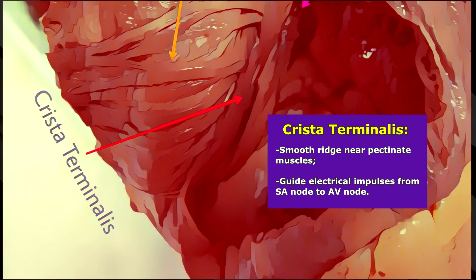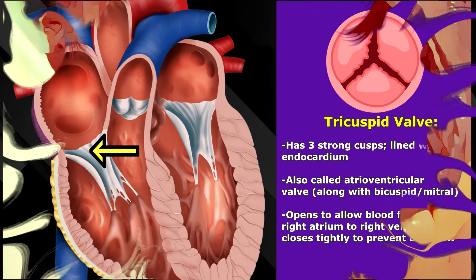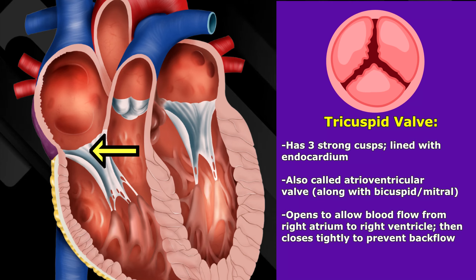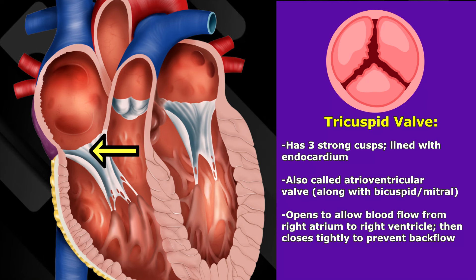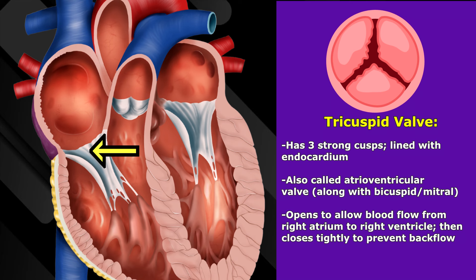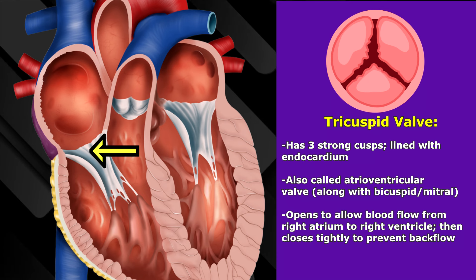Also located near the pectinate muscles in the right atrium is an important smooth ridge called the crista terminalis, which plays a vital role in guiding how electrical impulses travel throughout the atria and from the SA node to the AV node, so the heart can contract in a rhythmic way. Then as we go down through the right atrium into the right ventricle, we encounter the tricuspid valve. The tricuspid valve is lined with endocardium — the inner layer of the heart — and has three strong cusps or flaps. It is one of the two atrioventricular valves in the heart, the other being the mitral valve, also known as the bicuspid valve.